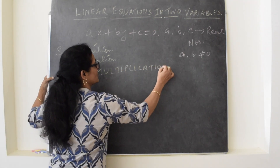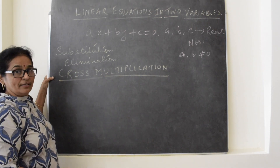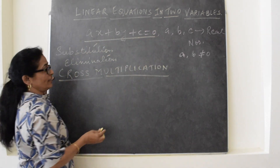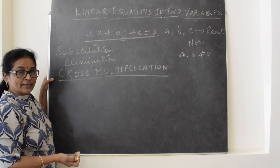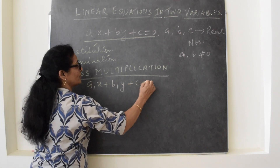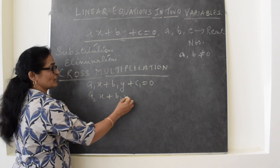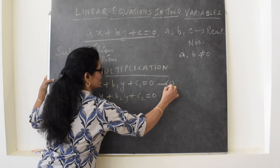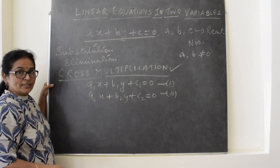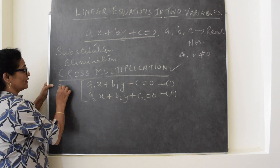Today we are going to discuss the cross multiplication method to solve linear equations in two variables. When we solve algebraically, we take two equations at a time: a1x plus b1y plus c1 equals zero, and the second equation is a2x plus b2y plus c2 equals zero. If we apply the cross multiplication method, the must condition is that these equations should be in their standard form.